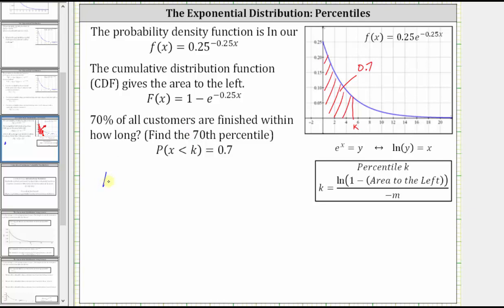Which gives us the equation 1 - e^(-0.25k) must equal 0.7. And now if we solve this equation for k, we can determine the 70th percentile.